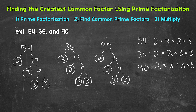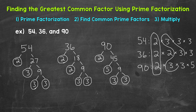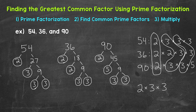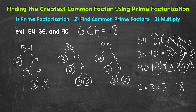Now that we have the prime factors listed, we need to look for common prime factors — factors that all three of these numbers share. 2 is a common prime factor. 3 is a common prime factor. And then we have another 3 in common. The common prime factors are 2, 3, and 3. Once we have those common prime factors, we multiply them to get the greatest common factor: 2 times 3 is 6, times 3 is 18. So the GCF — the greatest common factor of 54, 36, and 90 — is 18.